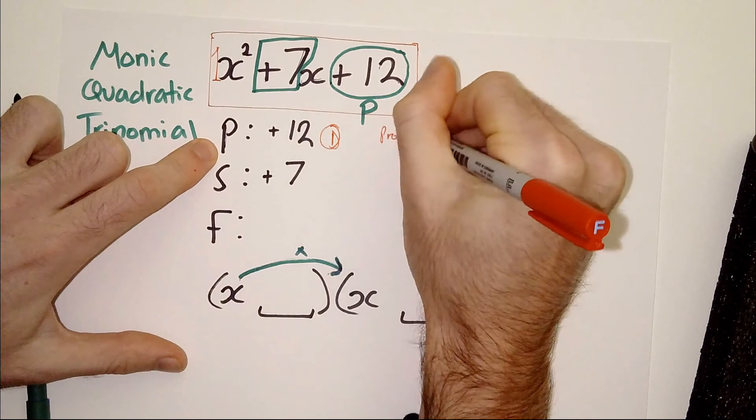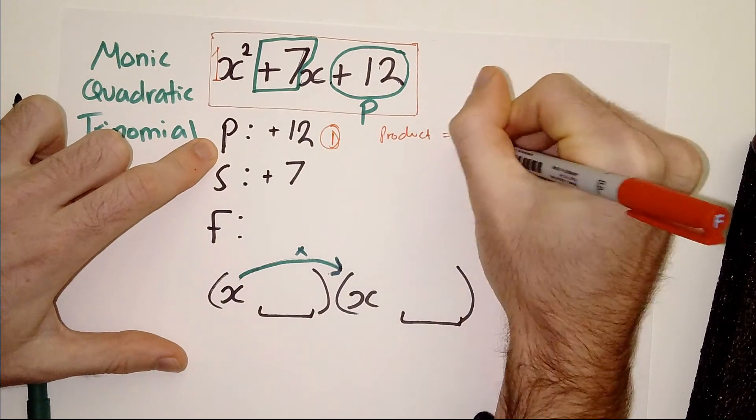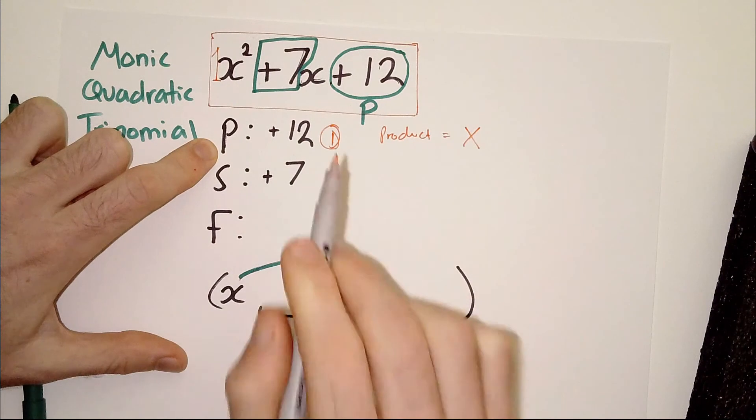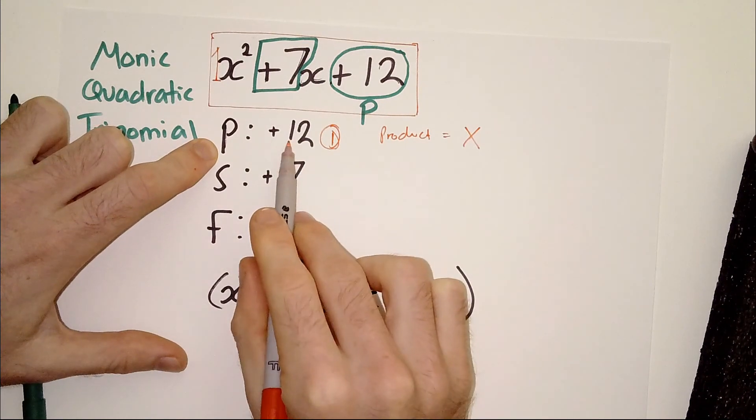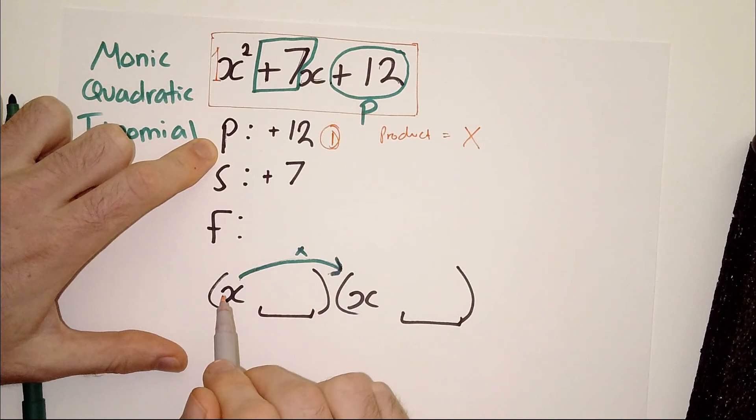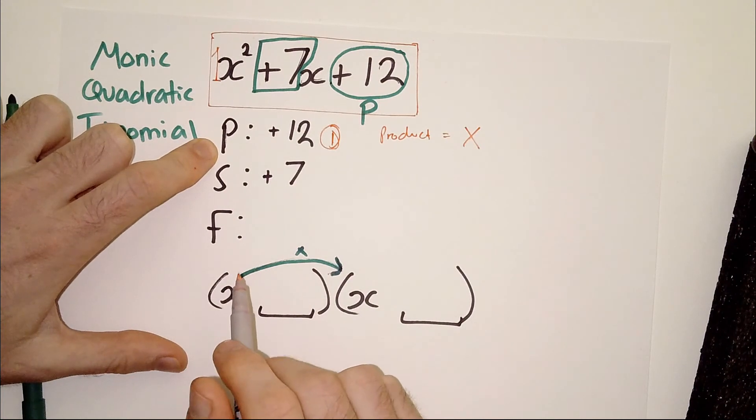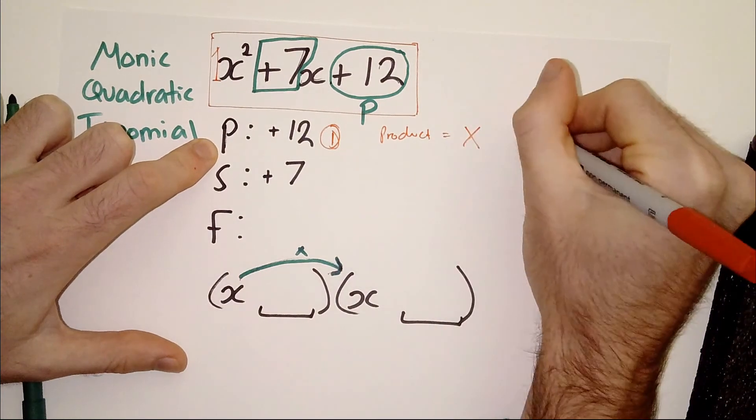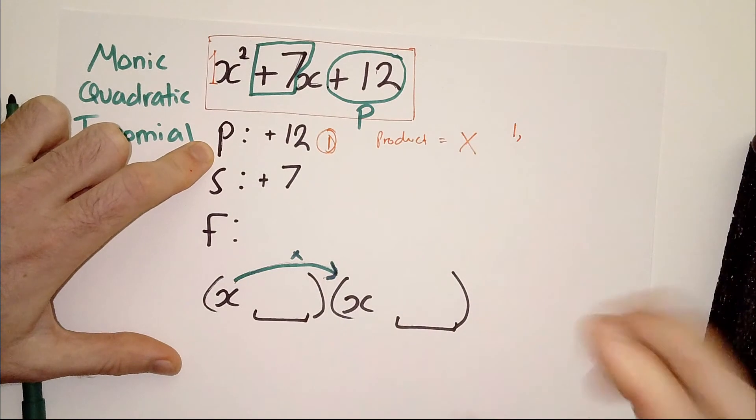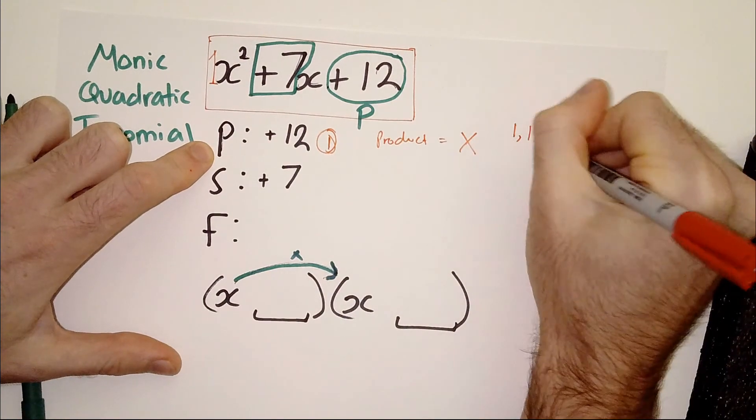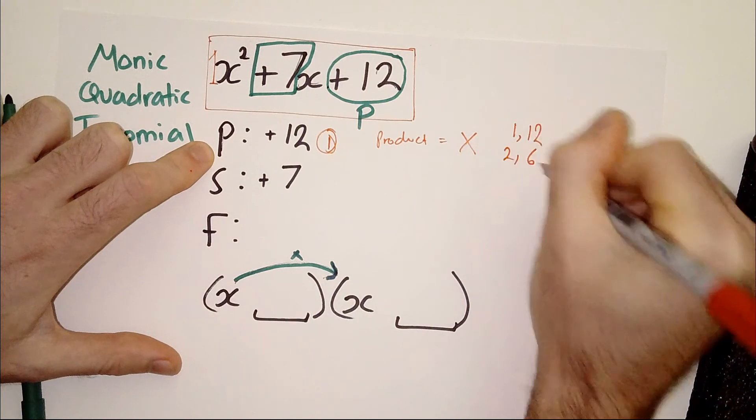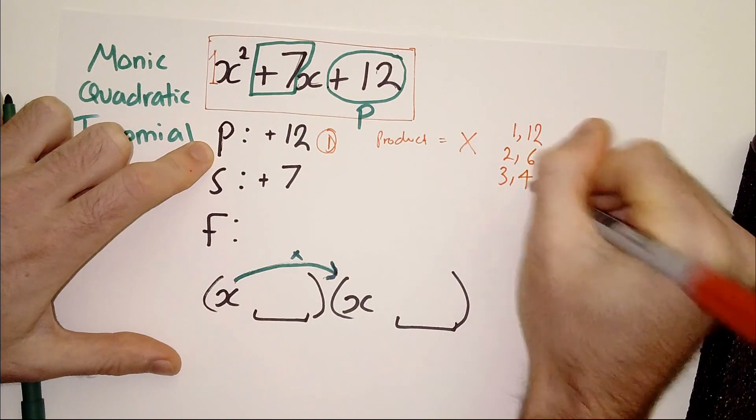This is the first step. The first thing you want to do is you want to ask, what are two numbers that multiply? That's why it's called product. So, product equals times. So, what two numbers multiply or times together to give positive 12, okay? And there's a few combinations that could work, right? So, we could have... And you can write them on the side when you're just getting used to this method for the first time. So, one and 12, one comma 12, two comma six, three comma four, right?